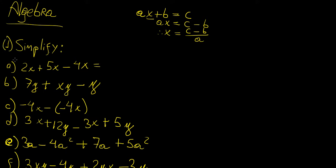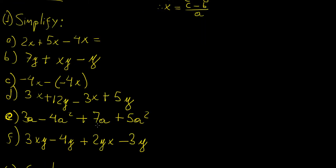In the first question, we're told to simplify the following expressions. When we have something like this, we take all the expressions that contain the same pronumeral. In this case, x is called the pronumeral because that's the letter attached to the numbers, and the numbers attached to the pronumeral are called the coefficients. To manipulate this expression, all we need to do is add or subtract the numbers in front of the x. So we have 2 plus 5, that's 7 — so 7x minus 4x — and then we subtract those two, giving us 3x.